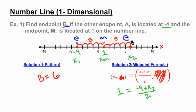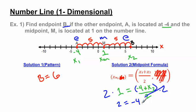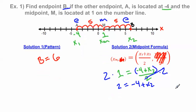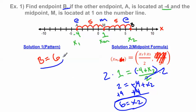To cancel out the denominator, we multiply both sides by 2. This gives us 2 times 1 equals 2, equals negative 4 plus x sub 2. The 2s cancel out. Then to get x sub 2 by itself, I add 4 to both sides, and we get 6 equals x sub 2. That's the exact same answer we got using the pattern method.